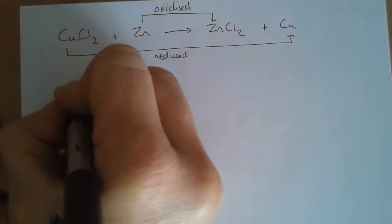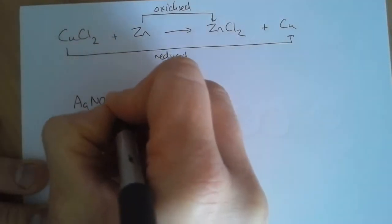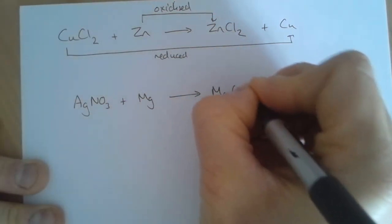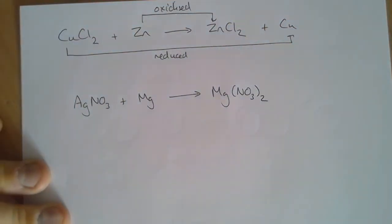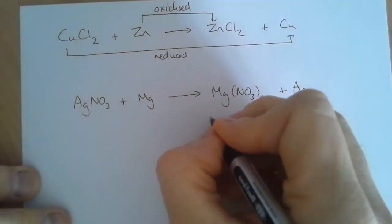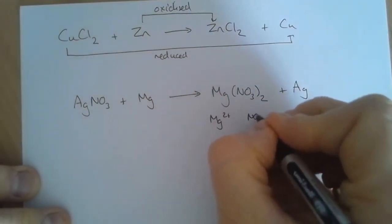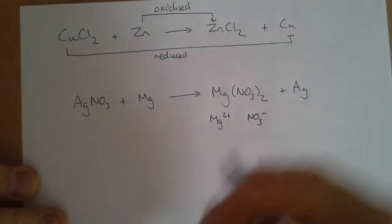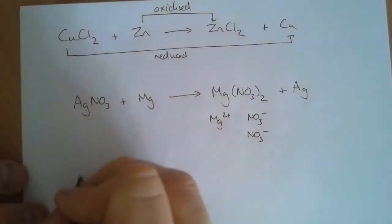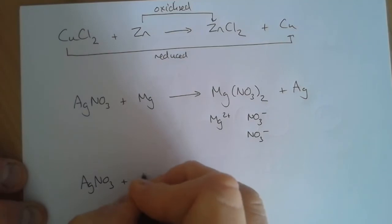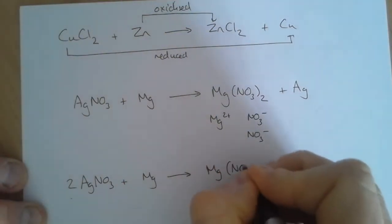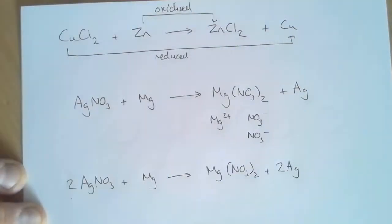Now I'm going to have a look at one where we need to balance an equation. I'll write the unbalanced version first and then balance it. This is silver nitrate reacting with magnesium. Because magnesium forms a 2+ ion and the nitrate ion has just a single negative charge, we need a second nitrate ion for the formula. So to balance this equation, we put a 2 in front of the silver nitrate and a 2 in front of the silver.